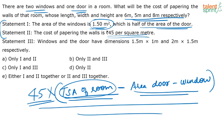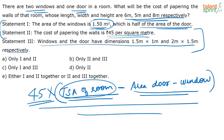There is one more statement. Statement 3 says the windows and doors have specific dimensions. So using Statement 3 you also get the areas of the windows and doors. And from Statement 2 you get the cost of papering per square meter. So if you take Statements 2 and 3 together, you also get the answer. Therefore either Statement 1 and 2, or Statement 2 and 3 are sufficient to answer the question.